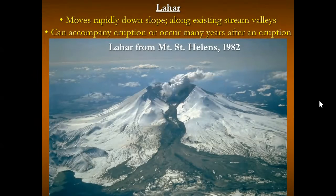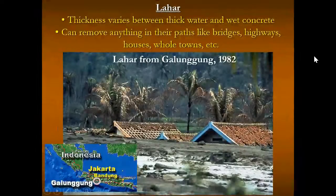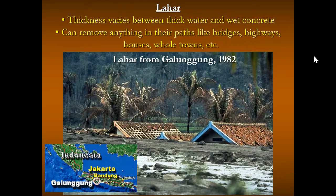There have been several infamous examples of mudflows burying towns from volcanic eruptions. Here's a lahar from Mount St. Helens in 1982. They're very fast, moving along existing stream valleys, and can accompany eruptions or occur even many years after, because volcanic debris can mix with water and produce these mudflows. Consistency can range from muddy water to wet concrete, and they can plow through bridges, highways, houses, even whole towns.